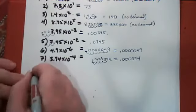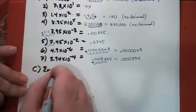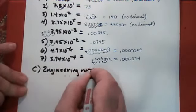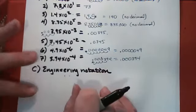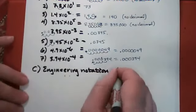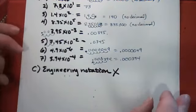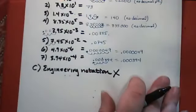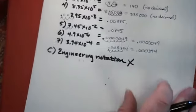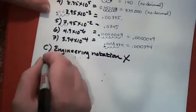Part C is engineering notation. Since we're here to study chemistry and physics, not engineering, I'm going to leave that section out. We can skip the section on engineering notation. The page after that is scientific notation and metric prefixes, which will be the next one we work on after we go over the metric prefixes.